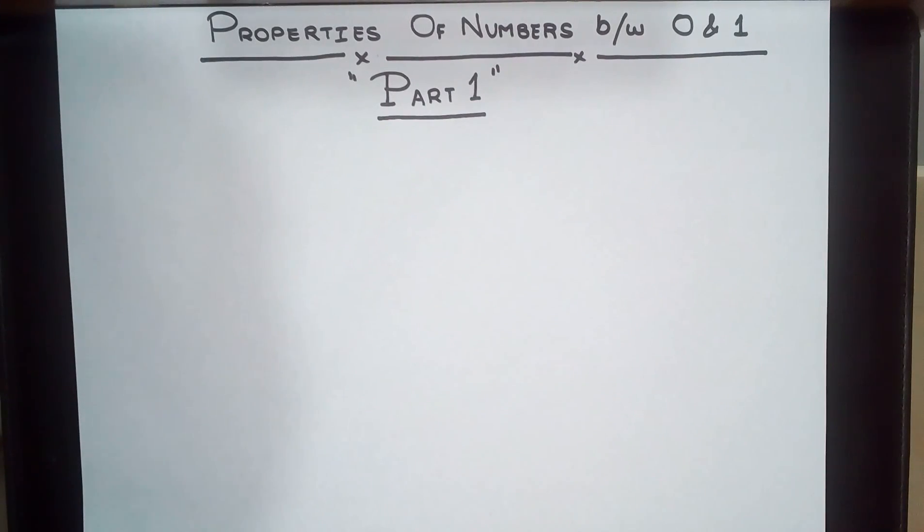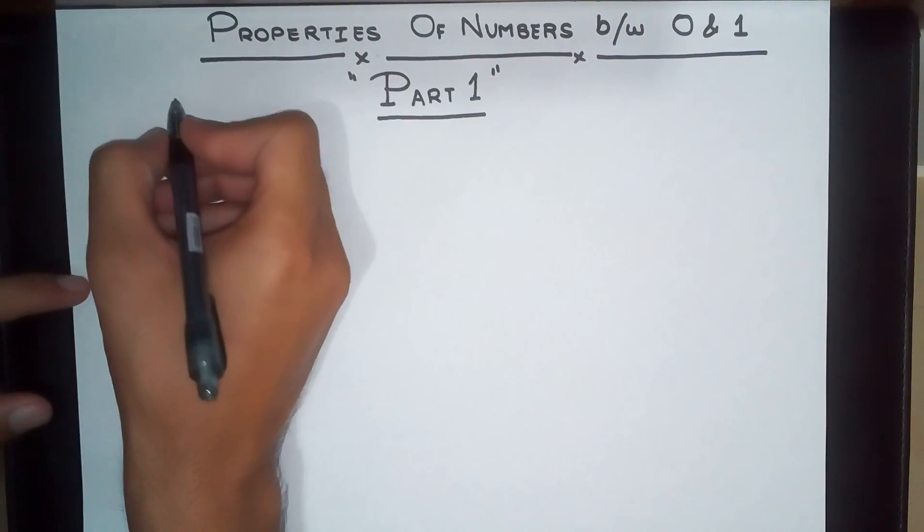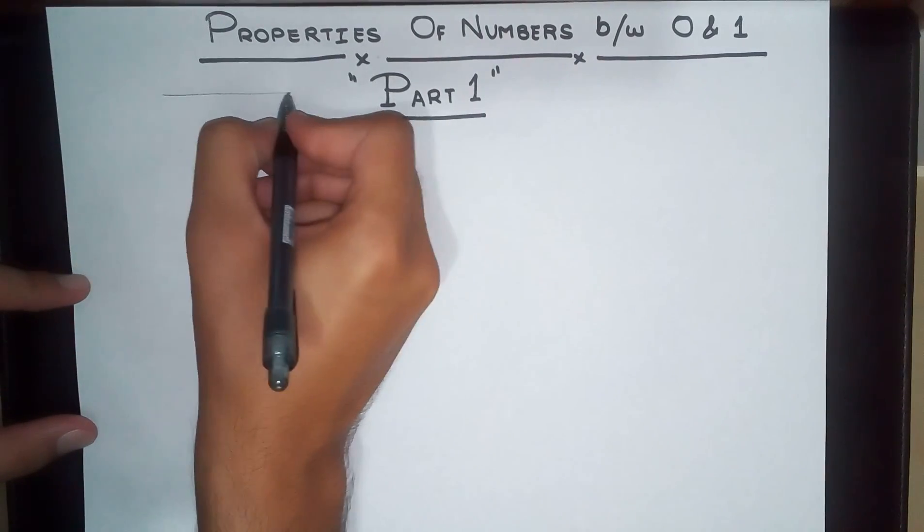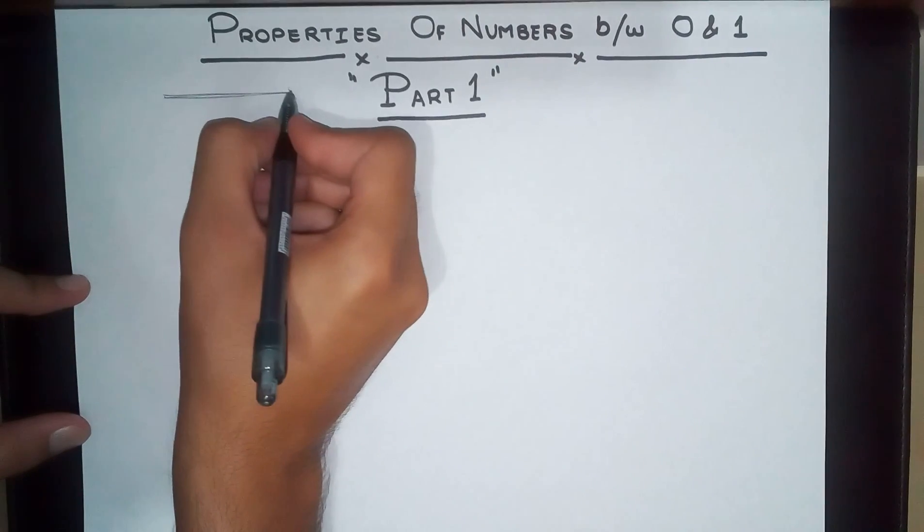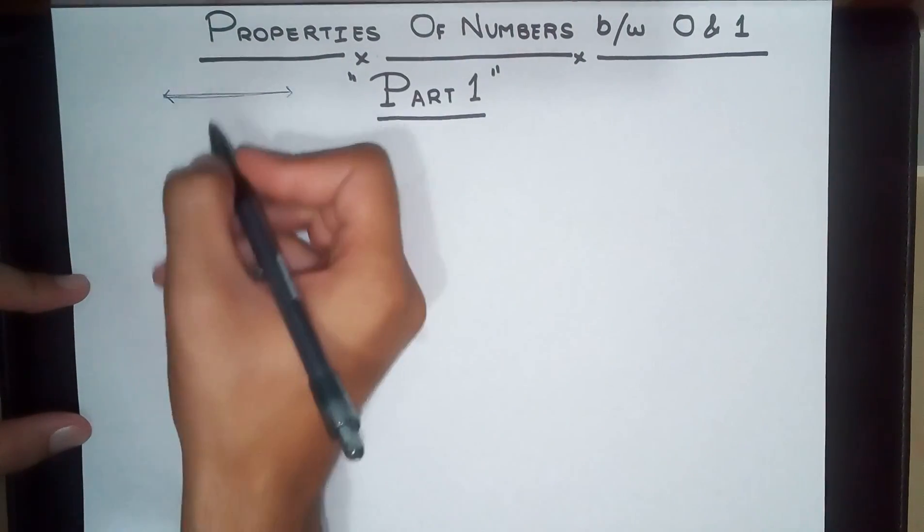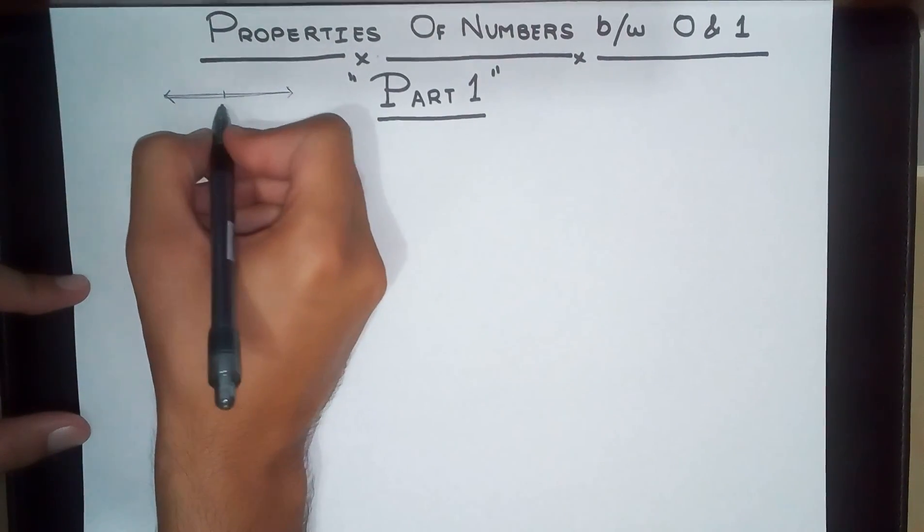Okay, so right now we are discussing the numbers between 0 and 1 and what kind of properties they exhibit. Let me start off with drawing a number line over here, and we're going to see what numbers we are actually discussing. So if this is 0...